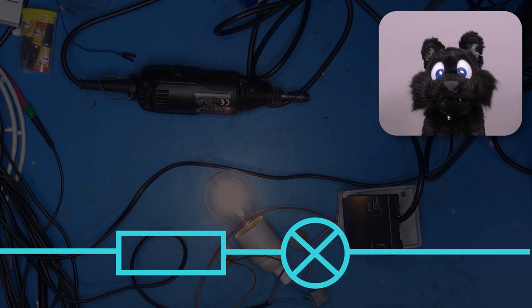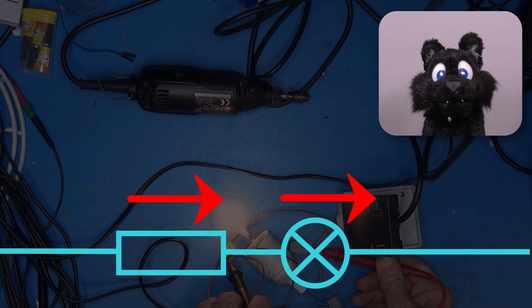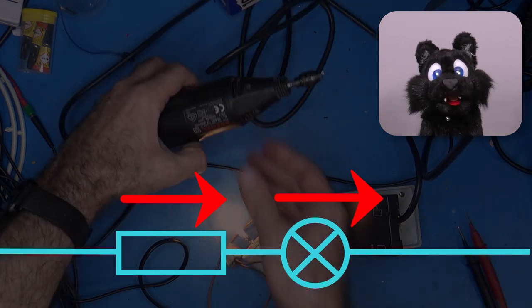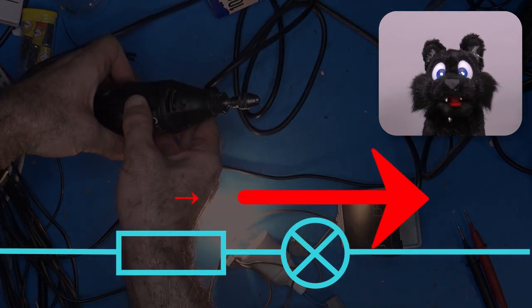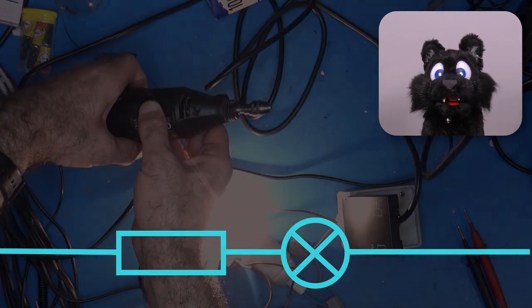To sum it up. The key aspect of a dim bulb circuit is the fact that the filament changes resistance, based on how hot it is. This will auto-limit the current across the load that is put in series to the same amount that the bulb would allow on its own.